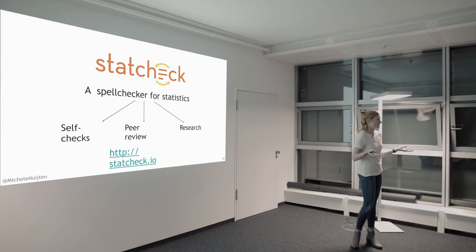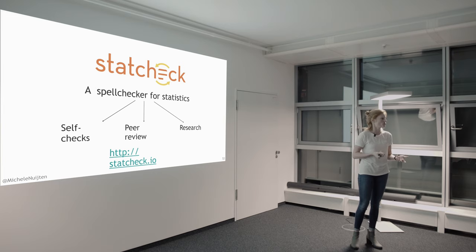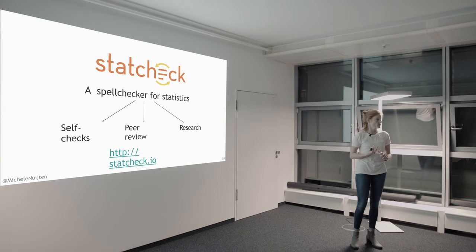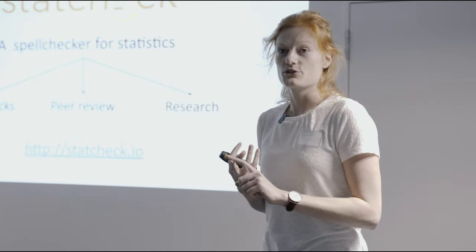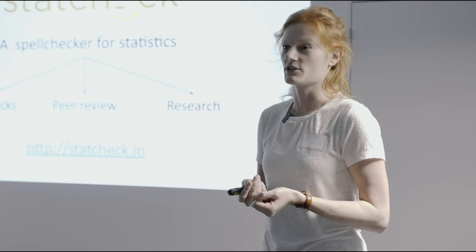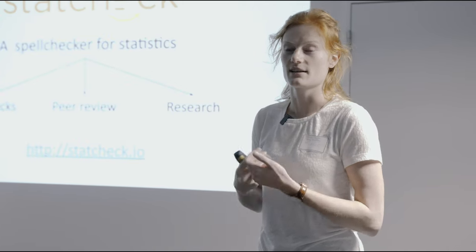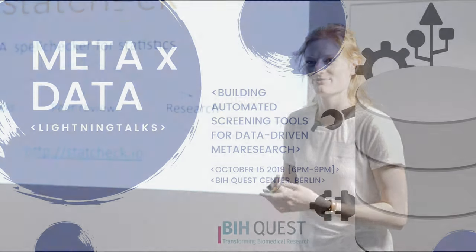So effectively what it is, it's a spell checker for statistics. I think it's very useful to use in self-checks before you submit a report to a journal, in peer review when you're screening other people's work, and in meta research if you want to screen large sets of statistics and say something about the consistency rates. Thank you very much.